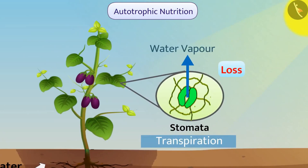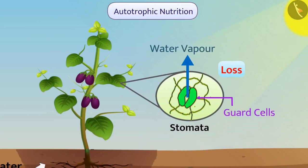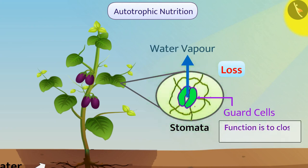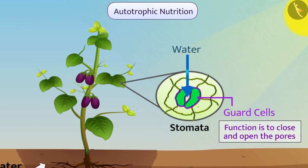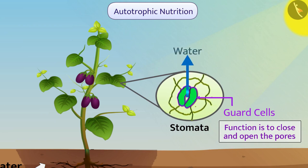To prevent this water loss, there are guard cells around the pores of stomata whose function is to close and open the pores. When water enters inside the guard cell, they swell and the stomatal pores open. When water comes out of the guard cell, they shrink and the stomatal pores are closed.